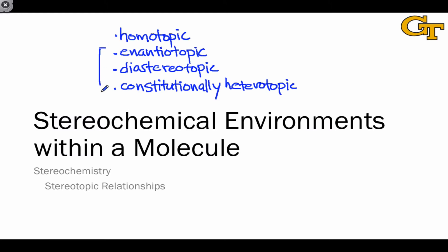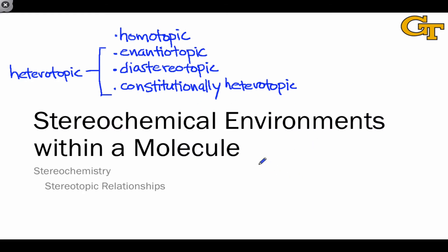In fact, all three of these are collectively referred to as heterotopic relationships since they indicate a difference in the spatial environments around the two groups. Homotopic groups have equivalent stereochemical environments.